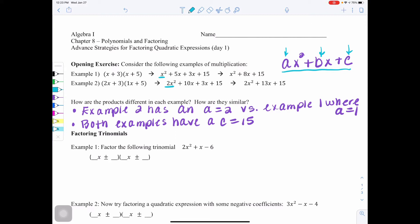Second thing, both examples, however, have in common a c value of 15. So this means we have to take a different approach for problems like example 2 because of the fact that the coefficient on x squared, or the a value, is not a 1.